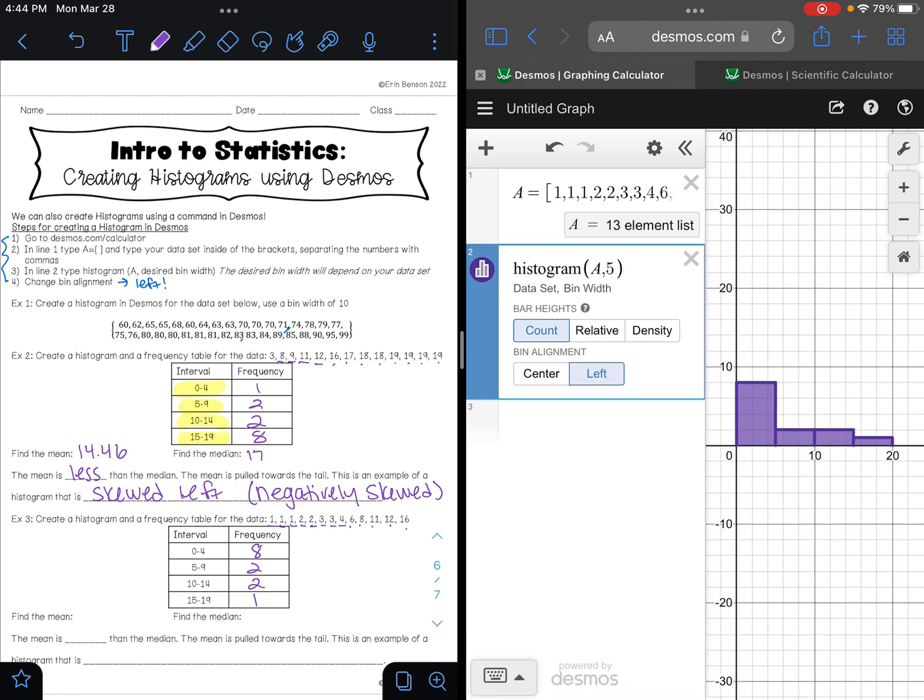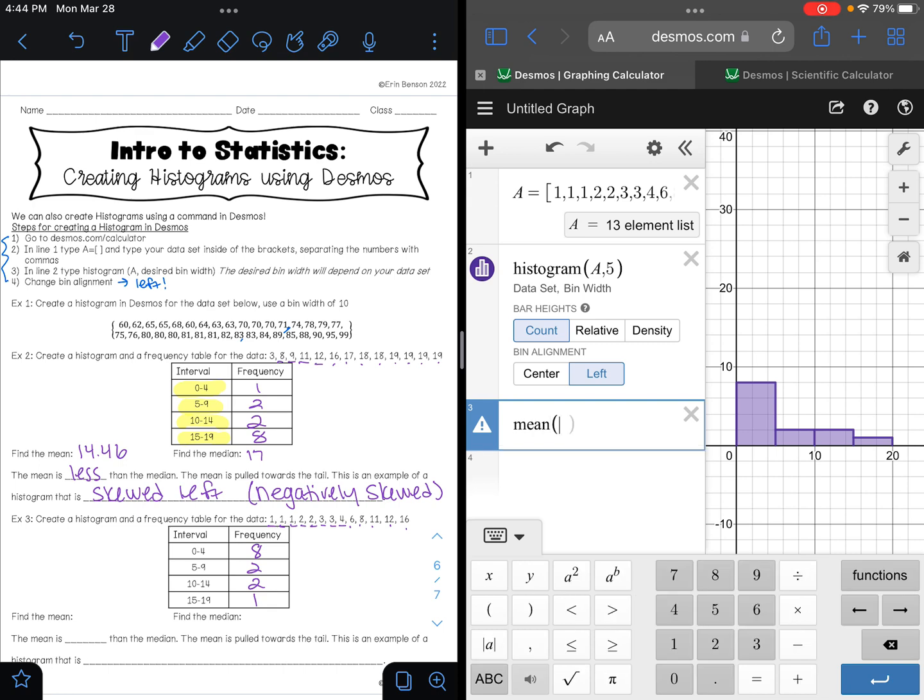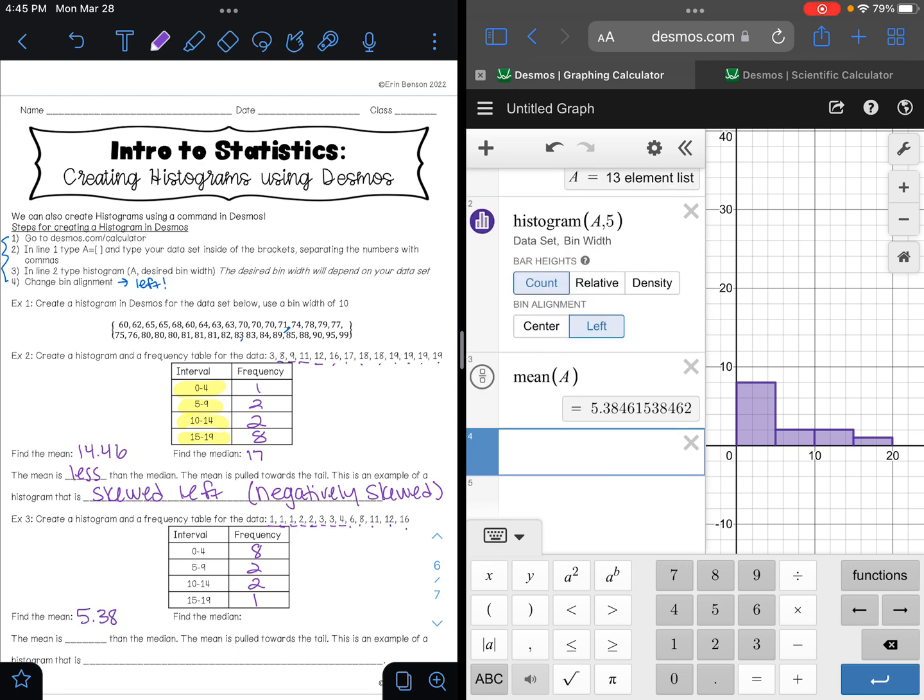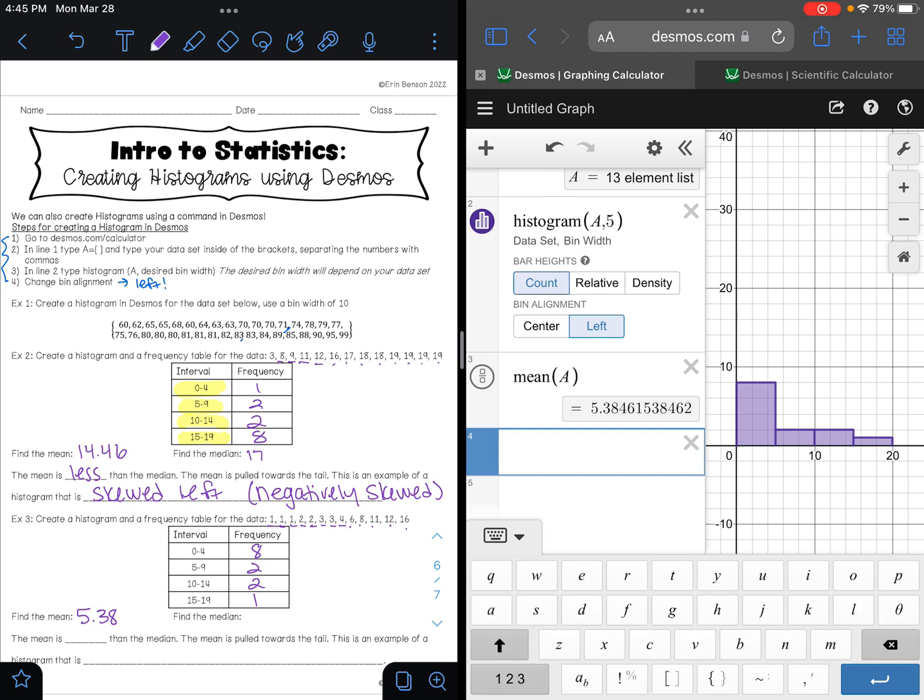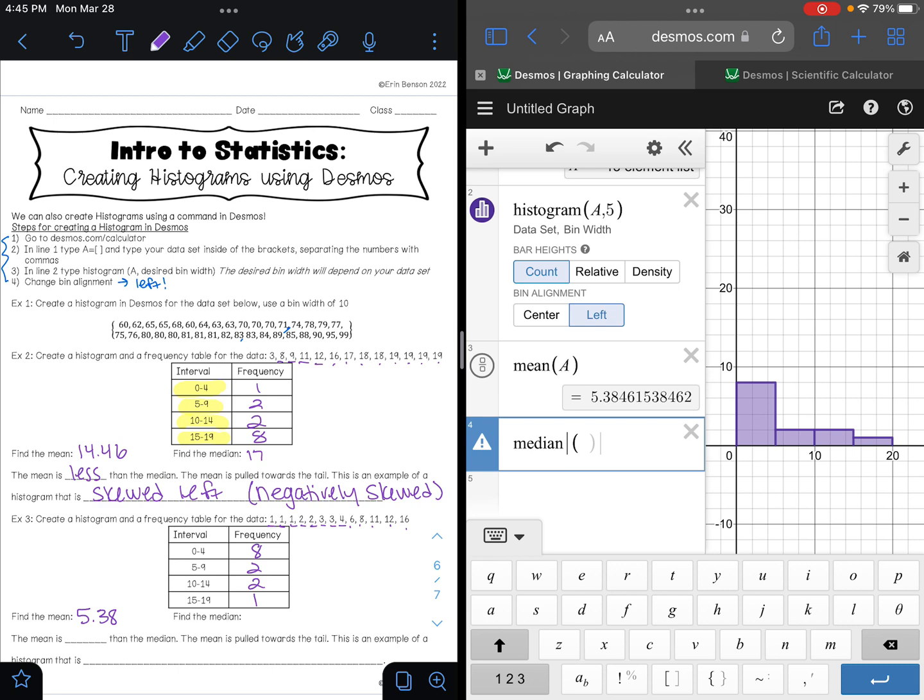Next they want to know the mean, so I'm going to type in mean of list A and I get five point three eight. My median, so if I type in median of list A, is three.